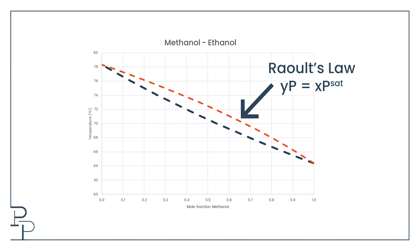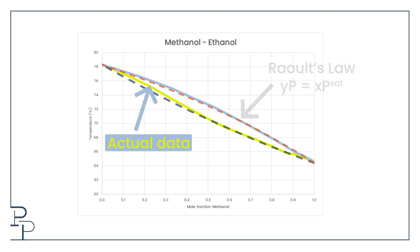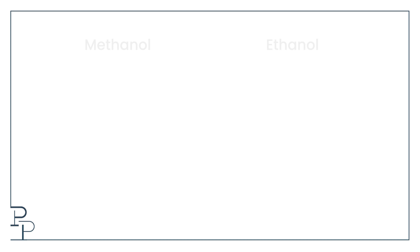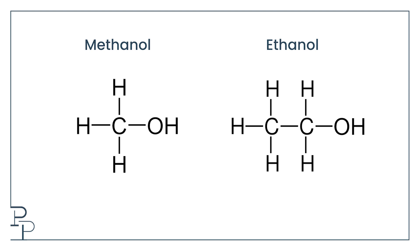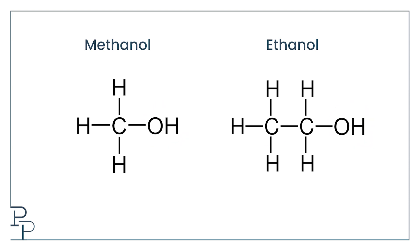Let's look at another system. Here is the Raoult's law prediction for the vapor-liquid equilibrium data for the methanol-ethanol system, alongside the actual data from the Dortmund data bank. The methanol-ethanol system is closer to being termed an ideal mixture, and you could maybe just get away with designing a distillation column to split these components using Raoult's law. The reason is that the molecules are structurally quite similar — both are alcohols with OH functional groups, and ethanol is simply larger with one additional carbon along its chain.